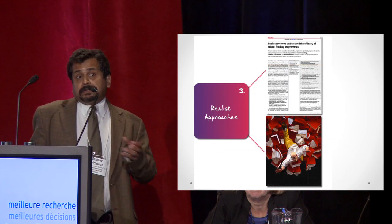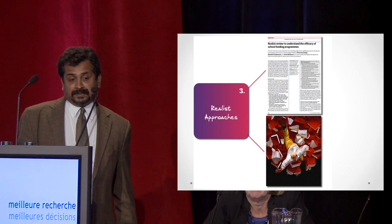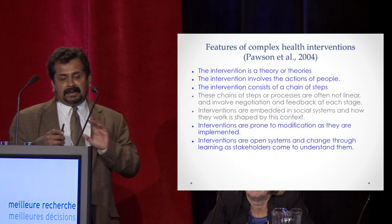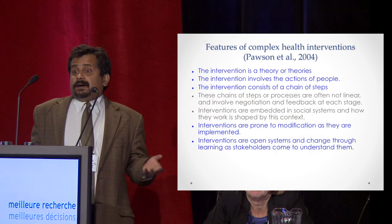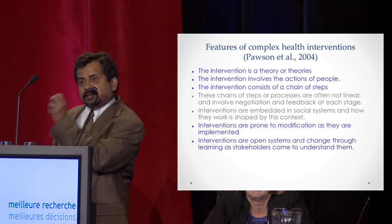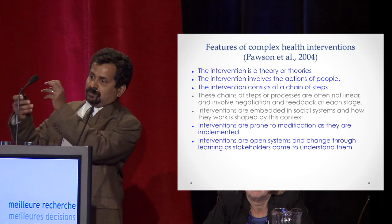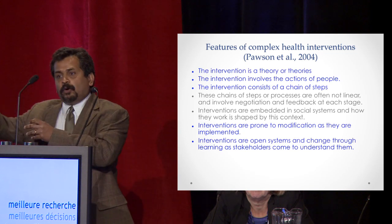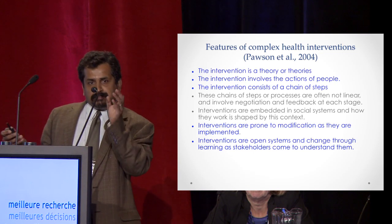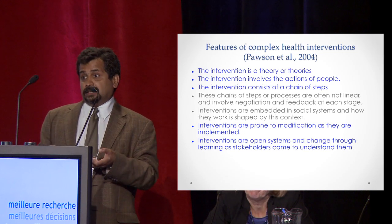A third and really growing approach in evaluation are the realist approaches that come out of Ray Pawson's work in the UK. Ray's big argument is that interventions are about theories. If you go back to Have a Heart Paisley, there was a theory that said if you focus on poor areas you're going to get poor people, then you do screening — there are a whole series of if-then statements. Ray says interventions are full of such assumptions, and the function of evaluation is to interrogate these assumptions. I find this quite useful in my practice.